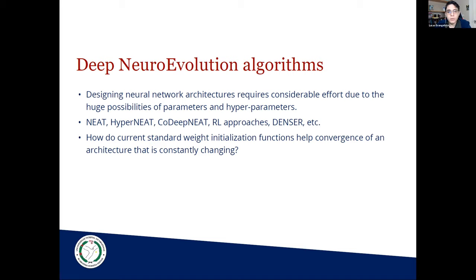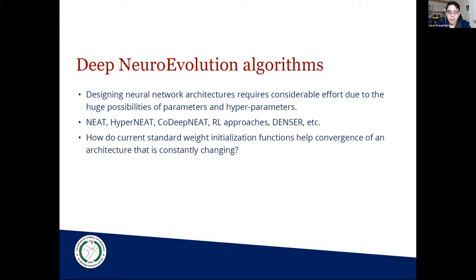At the same time, this paper is going to ask a very simple but very interesting question: how do current standard weight initialization functions help the convergence — or help in any way — of an architecture created by a deep neural evolution algorithm, whose architecture is always changing? We want to understand how the Xavier and He initializations can help those neural networks, because both were originally created for neural networks with fixed architectures. So we want to better understand how those weights affect an evolutionary run.